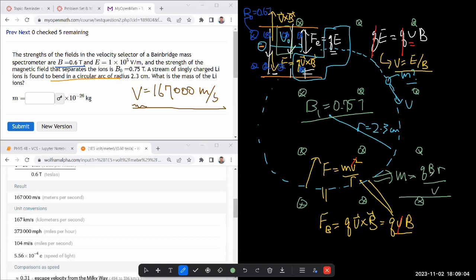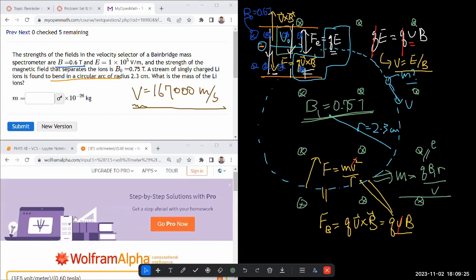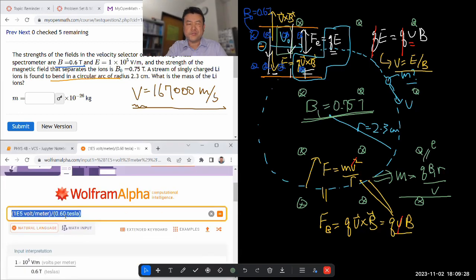I think I have some sense of what all these values are. B is my B1, this number here. q is, it says a singly charged lithium ion, so this is going to be equal to the elementary charge e. And let's see. Yeah, I think that's all the parameters. I have everything else. Let me plug in the numbers. So we have elementary charge times B1, which is 0.75 Tesla, times the radius of the circular arc, 2.3 centimeter. It'll convert that to basic SI units for me. All of that divided by the velocity, which we worked out, 167,000 meters per second.